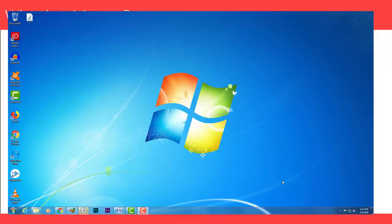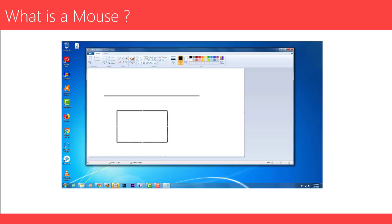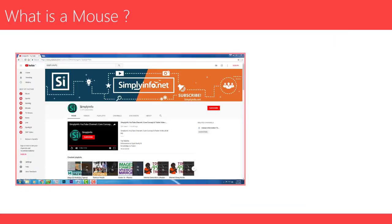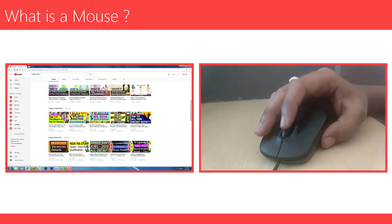In addition to moving a cursor, computer mice have one or more buttons to allow operations such as selection of a menu item on a display. Mice often also feature other elements such as touch surfaces and wheels which enable additional control and dimensional input.